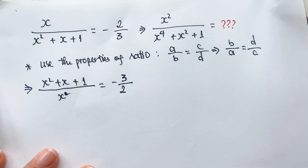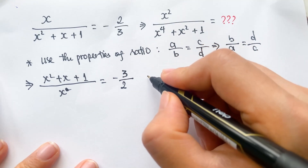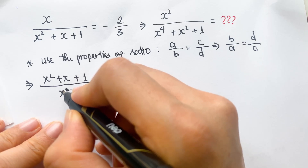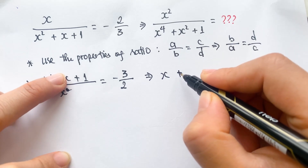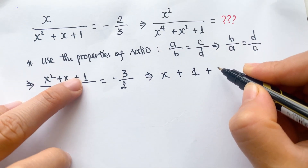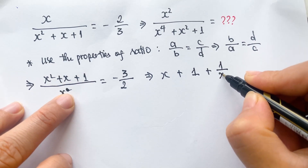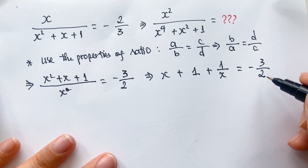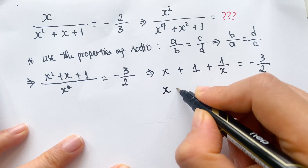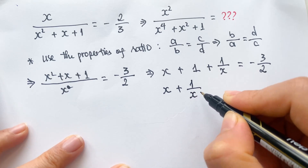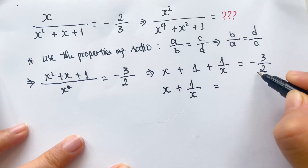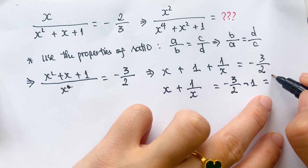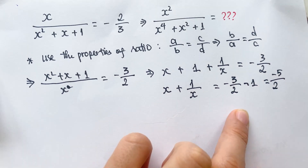And so, we have x squared divided by x equals x, x divided by x equals 1, and 1 divided by x equals 1 over x, and this equals minus 3 over 2. So you can write x plus 1 plus 1 over x equals minus 3 over 2, and therefore x plus 1 over x equals minus 5 over 2.